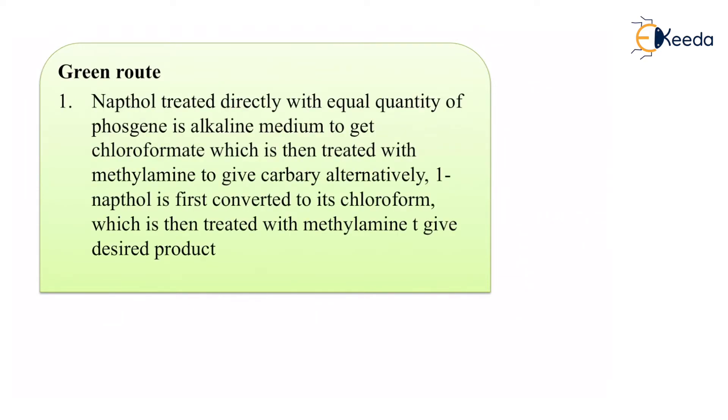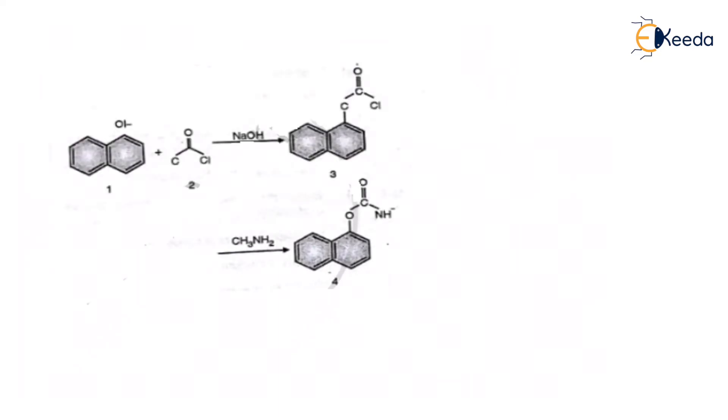The green route: naphthol is treated directly with equal quantity of phosgene in alkaline medium to get chloroformate which is then treated with methyl amine to give carbaryl. Alternatively, when naphthol is first converted to chloroformate which is then treated with methyl amine to give us the desired product. This is what the desired product looks like over here. If you see we cannot see phosgene. Phosgene which is not being seen is a good thing because phosgene is highly toxic in nature.